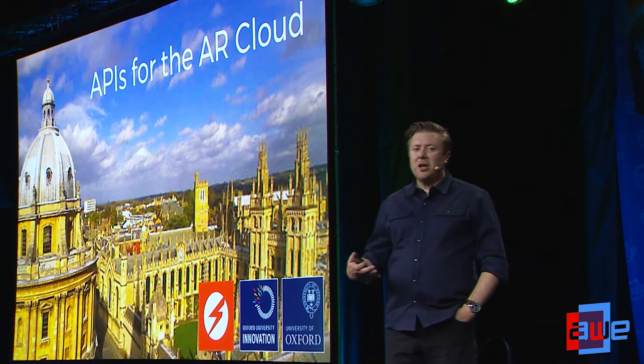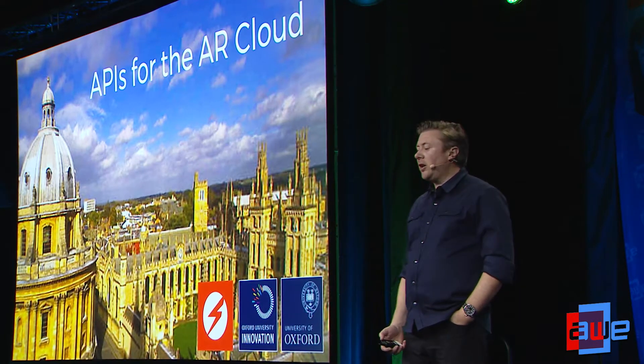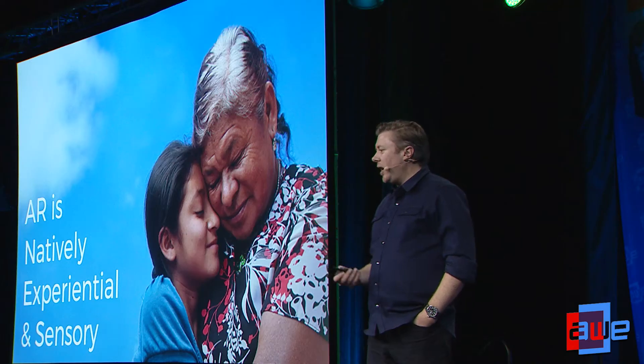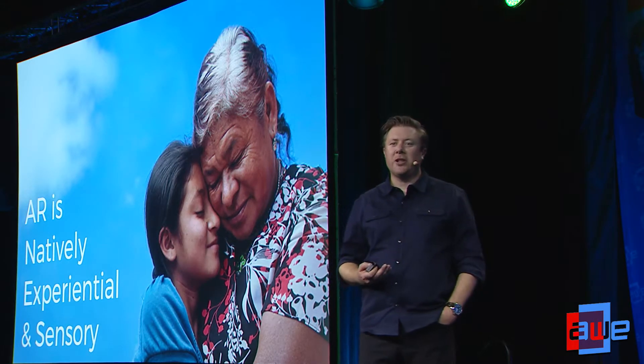We are a startup out of Oxford University. We spun out of a computer vision lab that really invented SLAM, or invented augmented reality on mobile phones. While I was at SuperVentures, I met my current co-founder Victor, and he showed me some of the research they've been working on over the last few years. I realized we had the potential to solve a really frustrating problem with AR — at their best, AR natively is experiential and sensory.